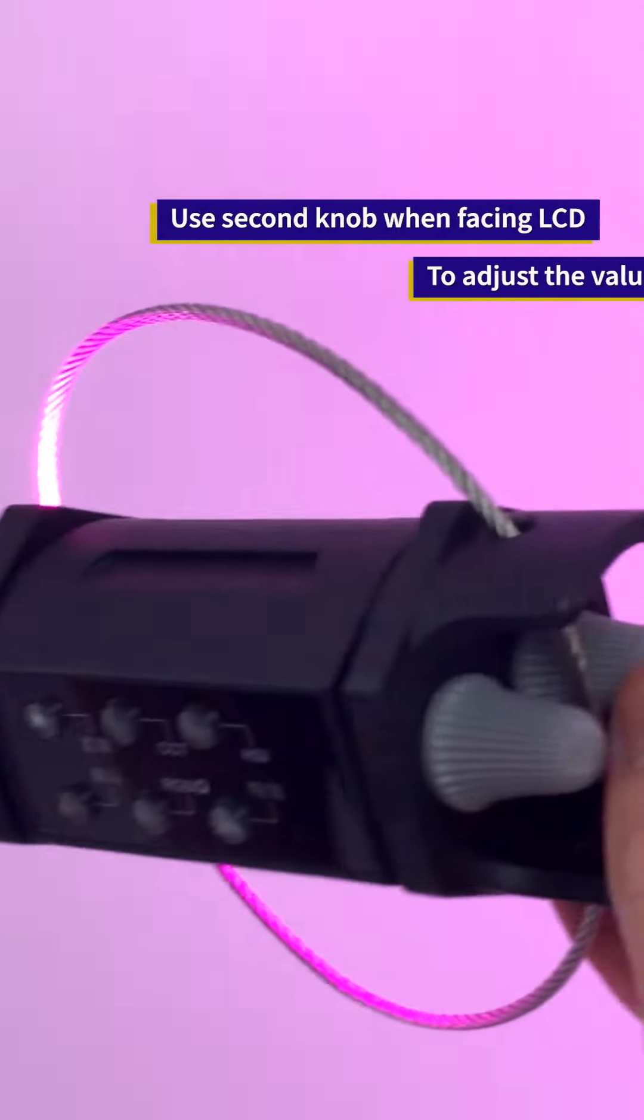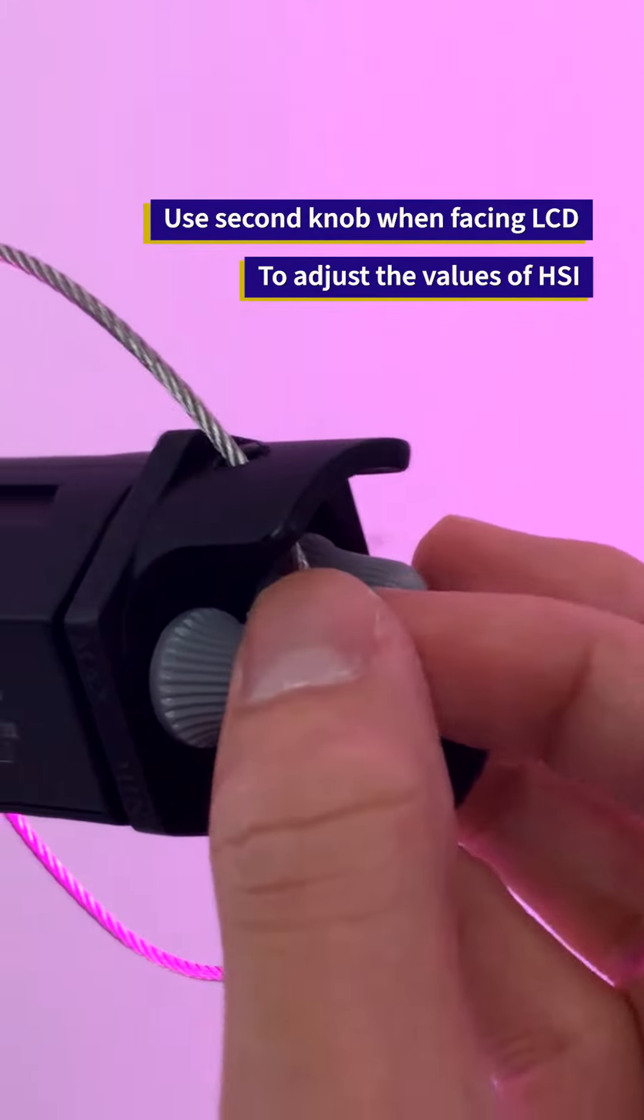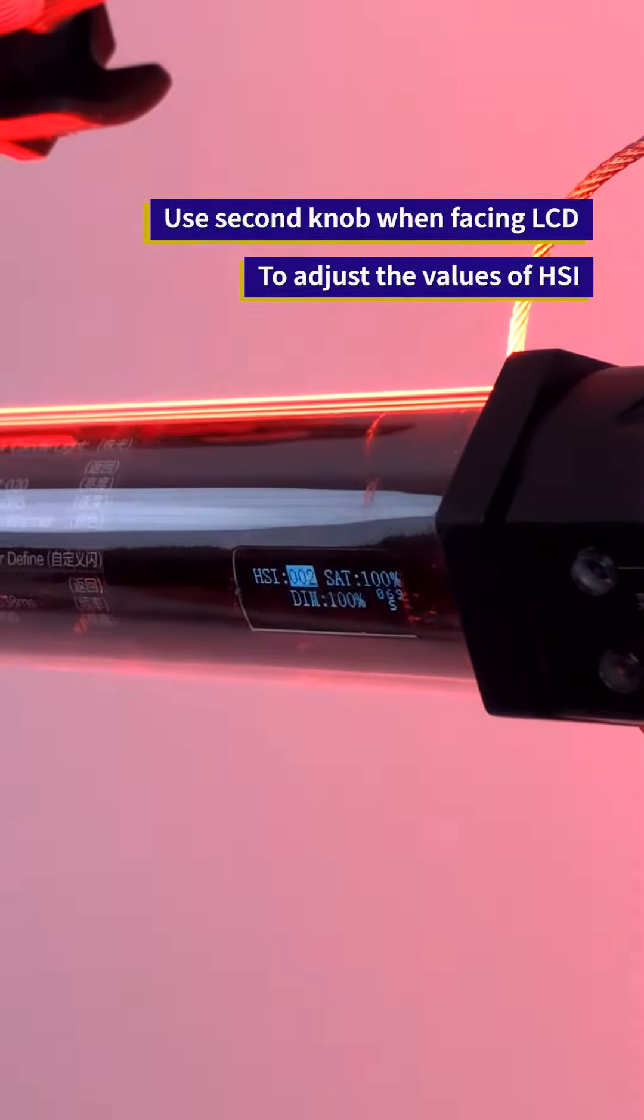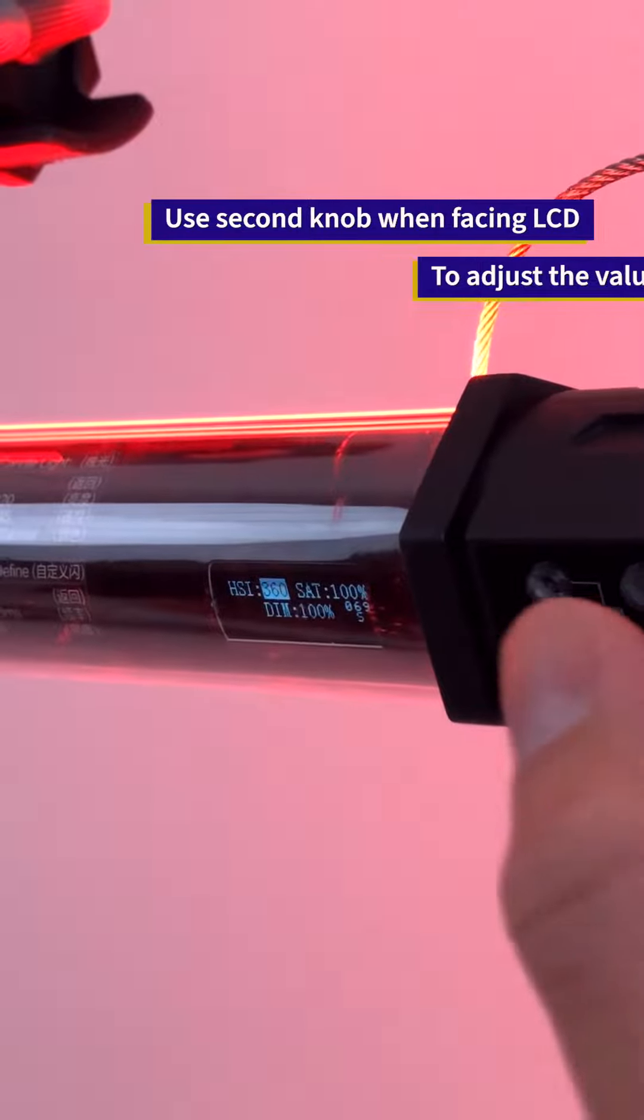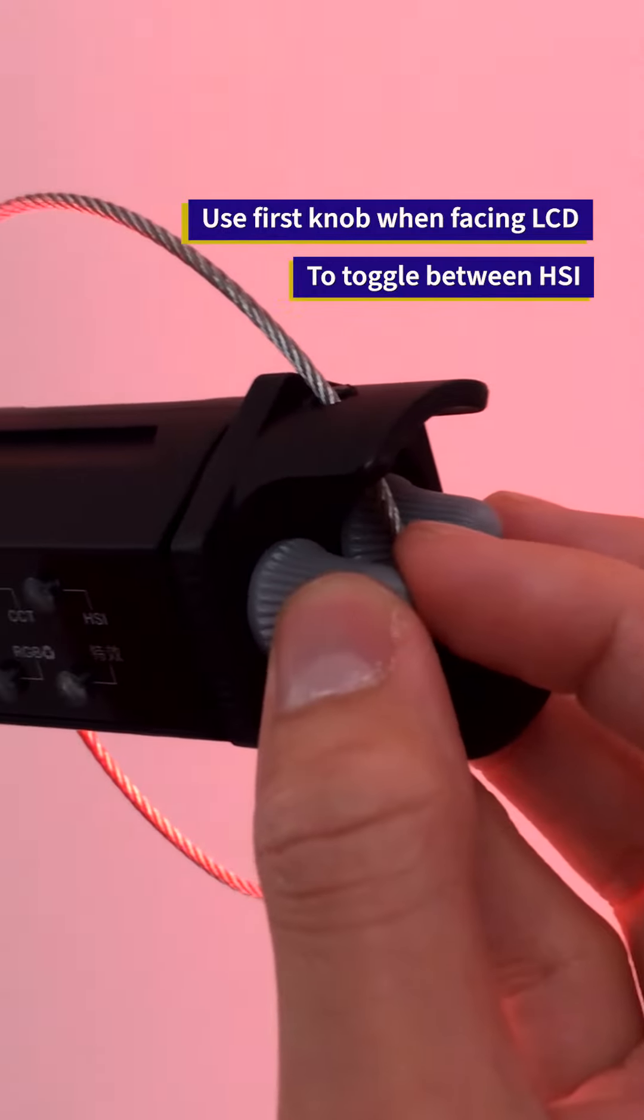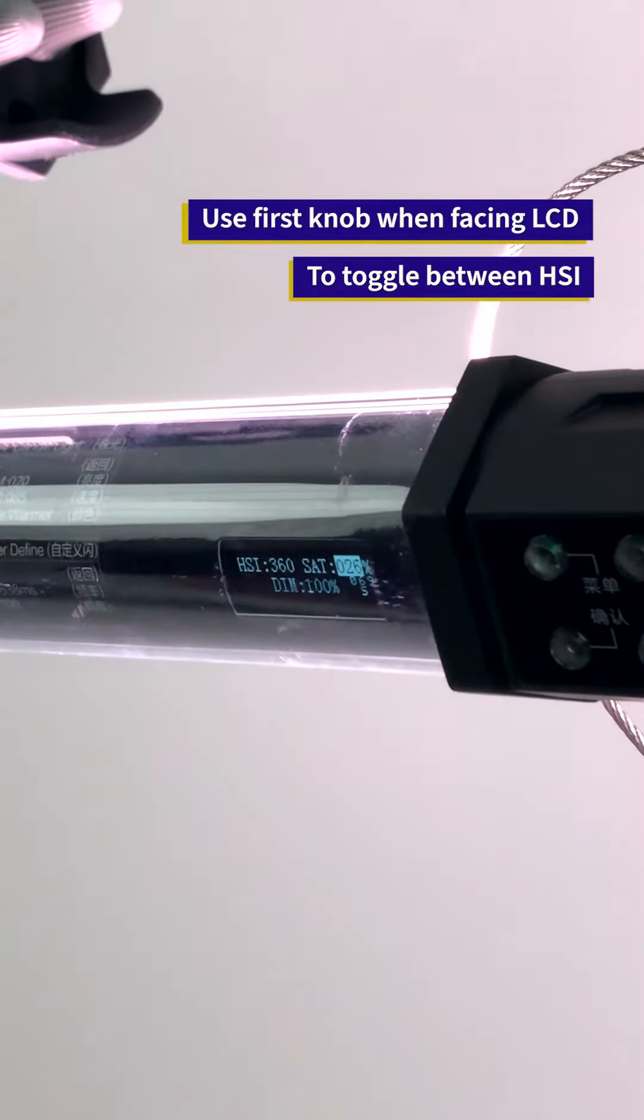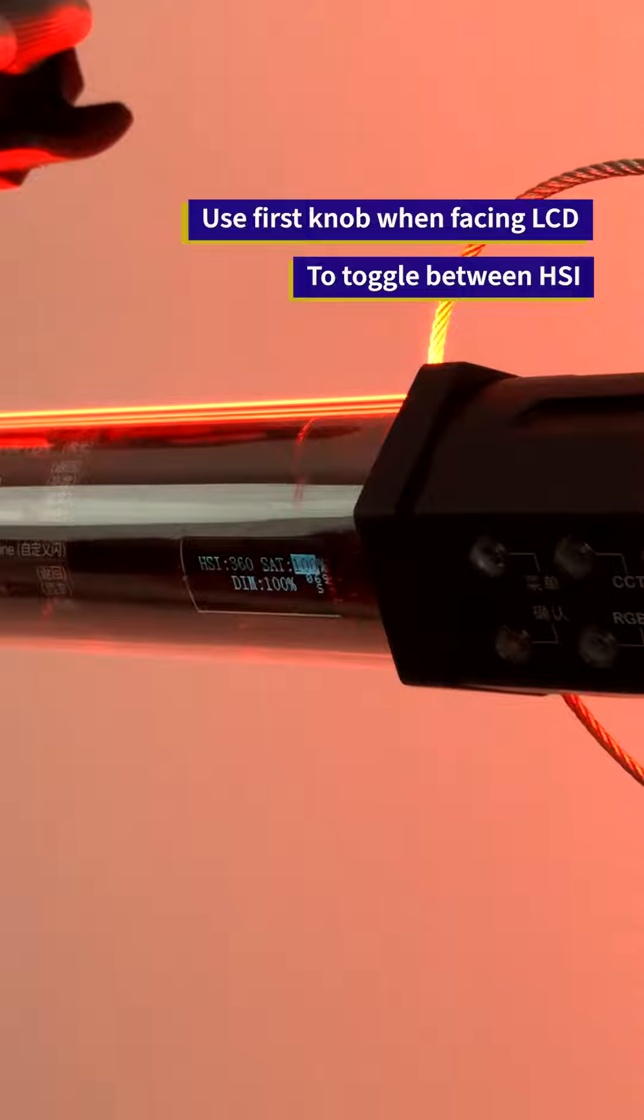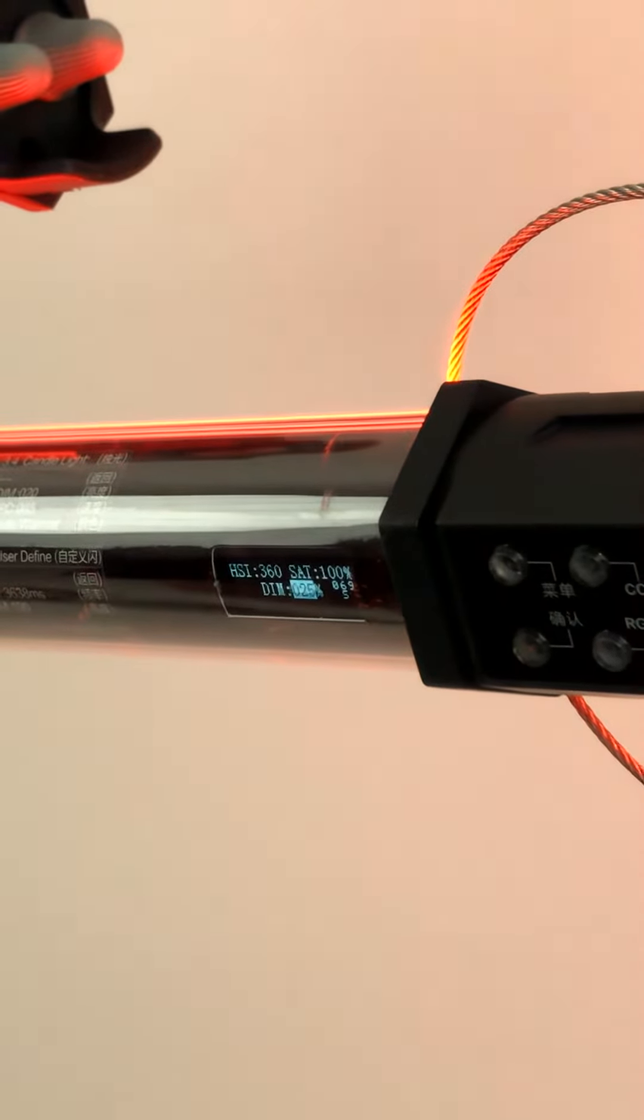Hue, saturation, and intensity. The second knob will help me to adjust my hue. If I want to jump over to the saturation, rotate the knob again. I can increase or decrease my saturation. The final one is my intensity.